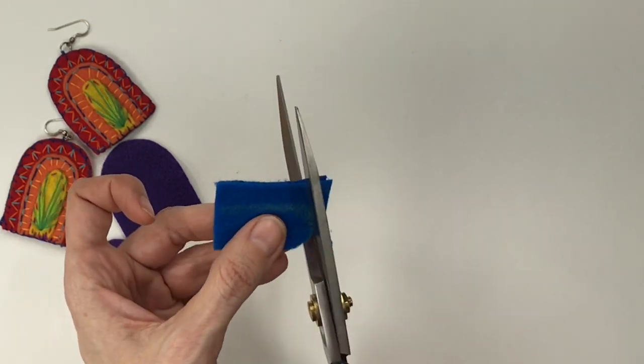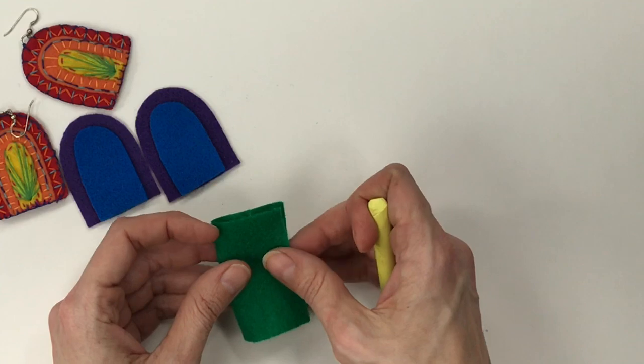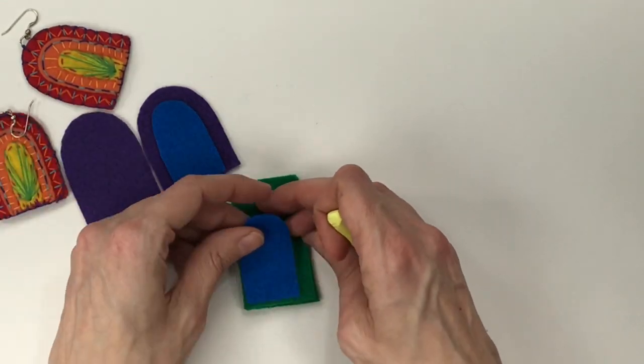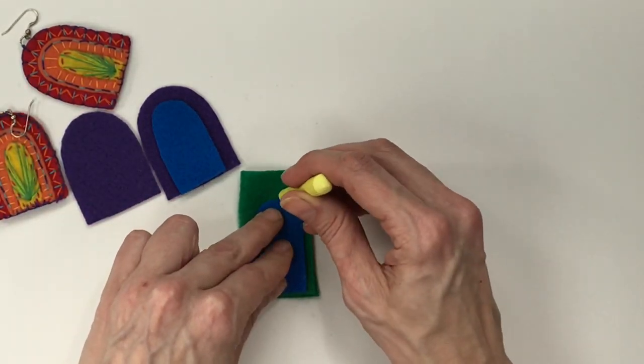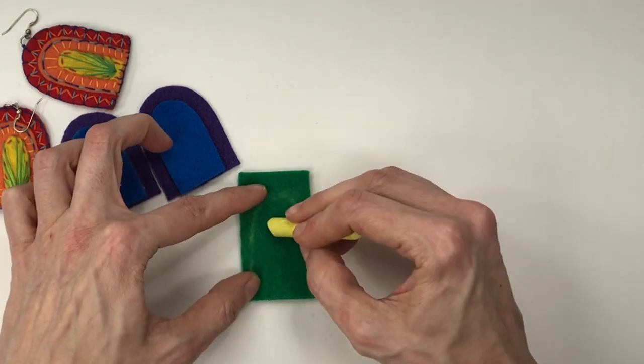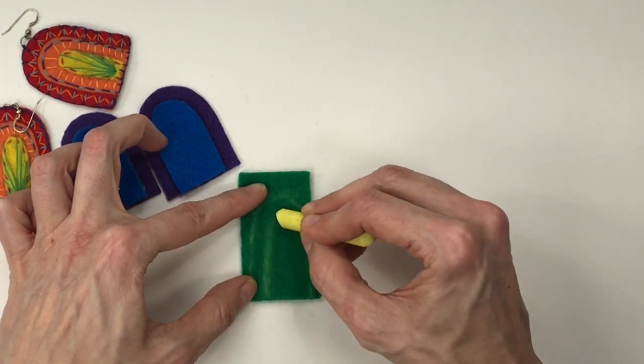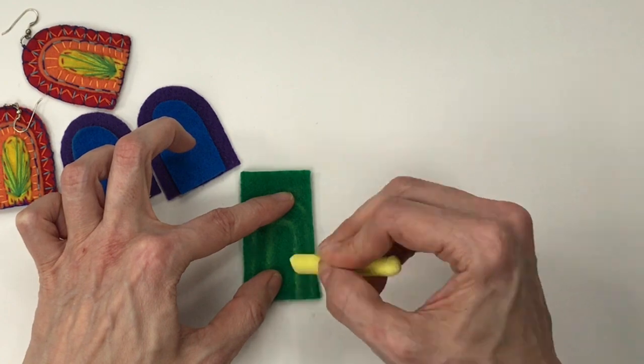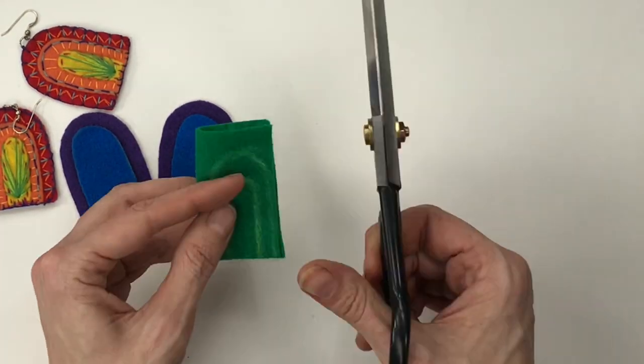Now I know you rainbow fanatics out there are going to get all up on my business about the fact that I started with purple as the biggest rainbow first and then work smaller down to green as opposed to vice versa. Let me just tell you I tried it, I didn't like it. I took my artistic license and I used it.